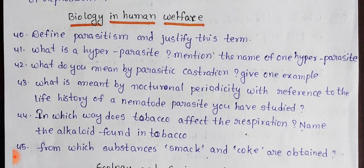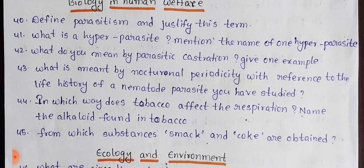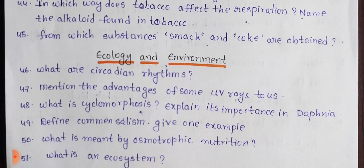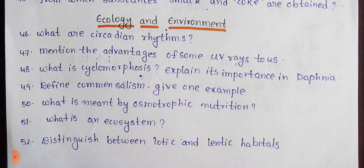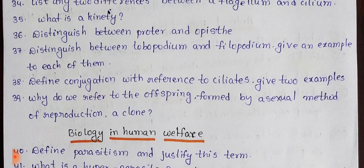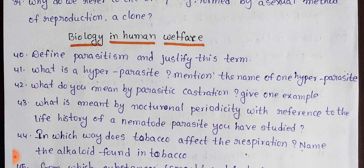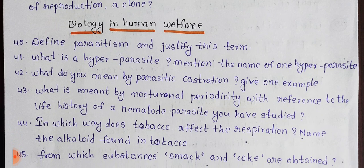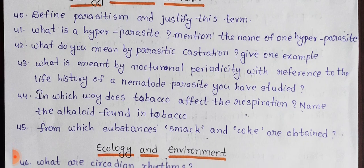Next lesson: Biology and Human Welfare — here you have 6 questions of 2 marks. Questions 40, 41, 42, 43, 44, 45. Next lesson, questions 46 to 52 — you have 3 plus 3, which is 7 questions of 2 marks. So students, we are trying to help you out. Please like and share. Thank you for watching.